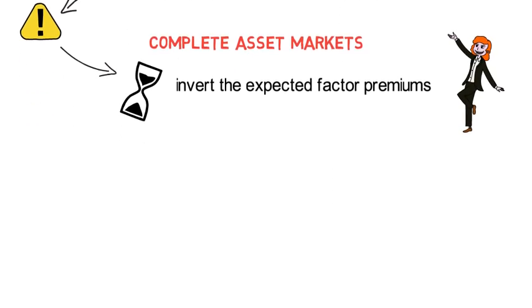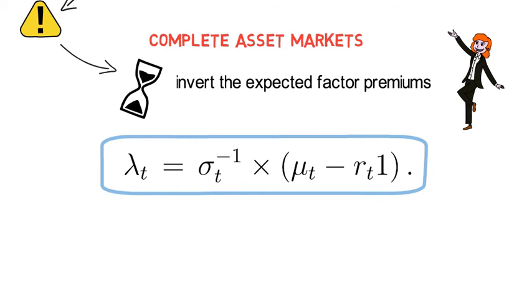you will be able to invert out the expected factor premiums by means of the expected asset premiums and asset volatilities. Mathematically, it means under complete markets, lambda t just coincides with sigma t to the minus 1 times the expected excess return of all assets. So it's the Sharpe ratio, basically.